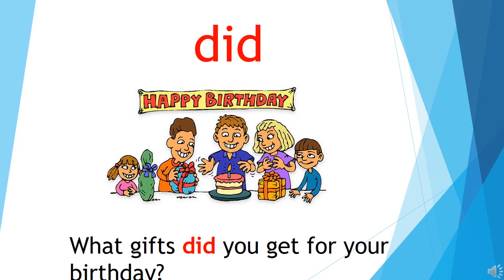The first word is 'did.' Children, repeat after me. We use 'did' when the action has been done in the past — something happened in the past and we are talking about it in the present. For example, this boy celebrated his birthday and got lots of gifts. So we make the sentence: 'What gifts did you get for your birthday?' His friends are asking, 'What gifts did you get for your birthday?'